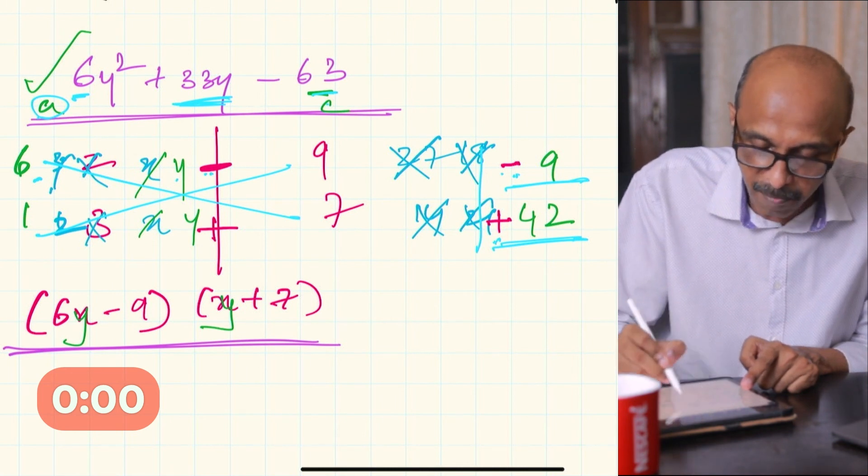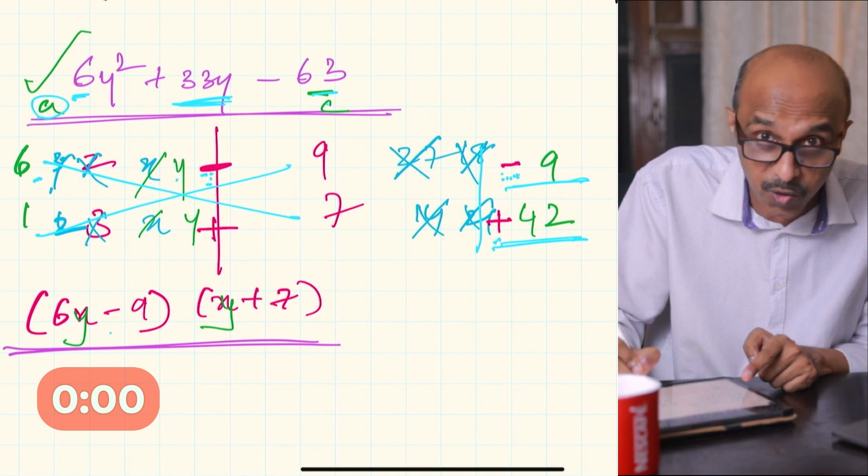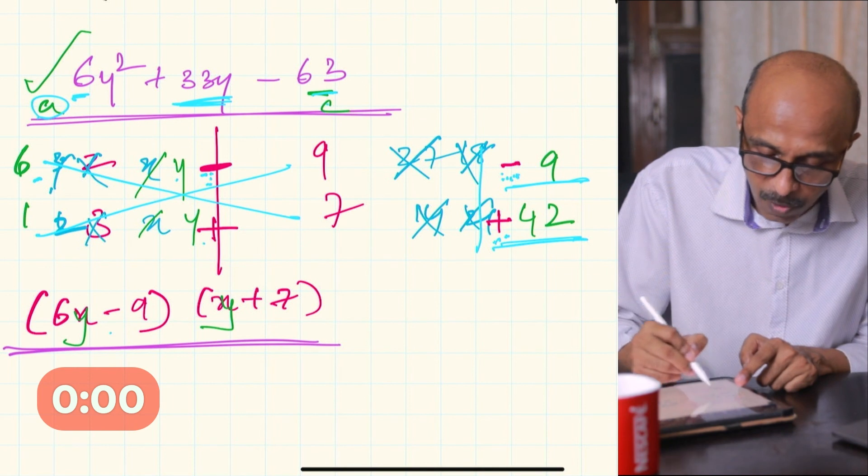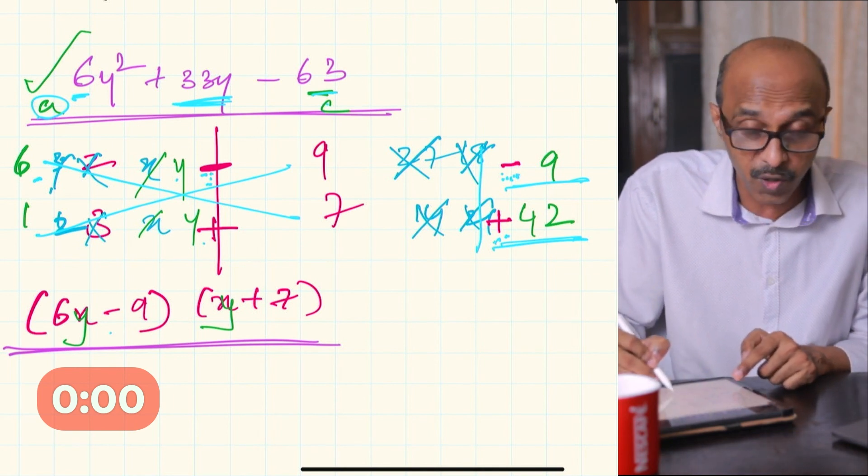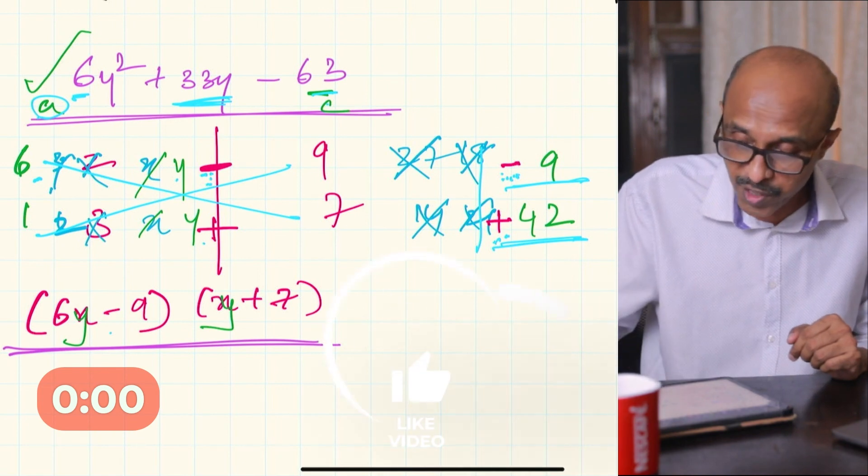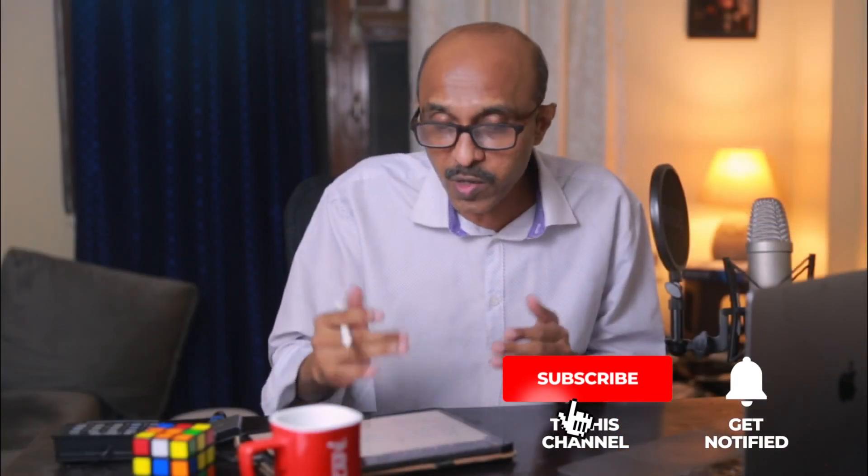6y - 9, that 9 carries that negative sign from the same sign you adopted for 9 here. Likewise, that positive sign comes from here, so it should be y + 7 for the next factor. This is a very simple technique, and the more you practice, you'll get proficient and be able to do it in record time. Now, this technique will only work when you don't have to justify the algebraic technique behind factoring. In the next video, I will explain the algebraic justification of factoring quadratic trinomials. See you in that one.